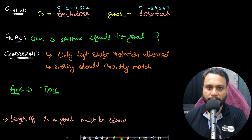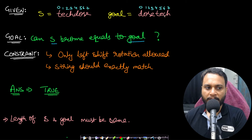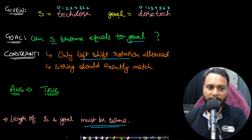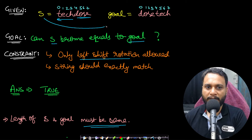Let's look at an example. Say we are given 'techdose' and our goal is 'dosetech'. We need to find out if string s can become equal to the goal string, where only left shift operations are allowed. After four left shift operations on s, 'dose' comes to the beginning and 'tech' goes to the end, so s matches the goal.